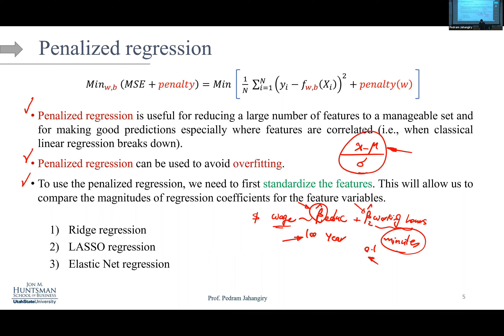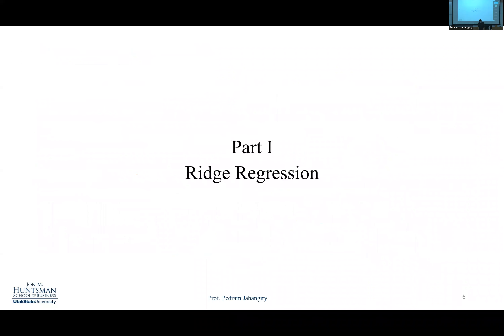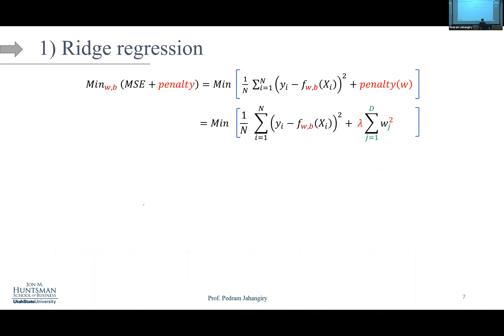That's why we standardize features before changing the loss function. The only difference between ridge, lasso, and elastic net is in the penalty term of the loss function. If I use L2 for the penalty, I call it ridge regression. If I use L1, I call it lasso. If I use a combination of L1 and L2, I call it elastic net — a weighted average of the two.